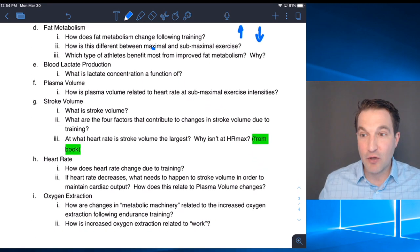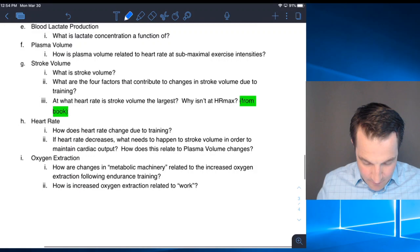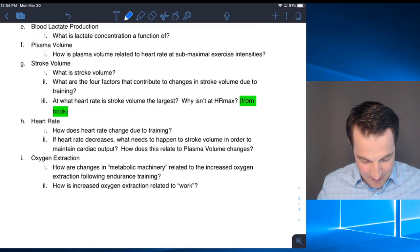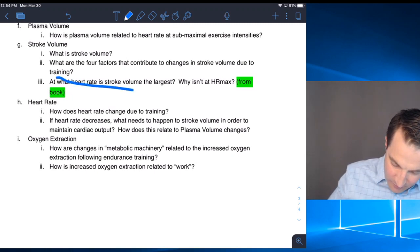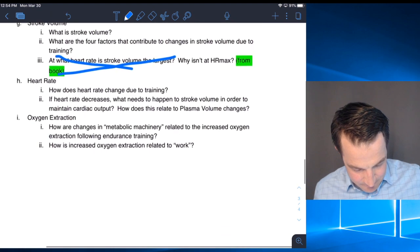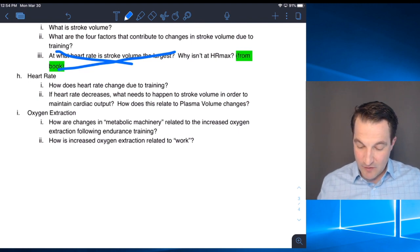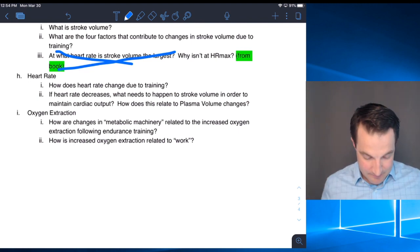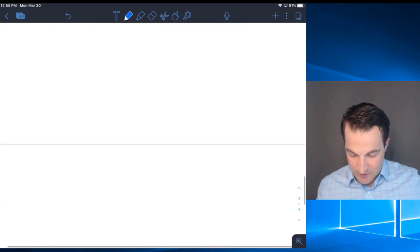What type of athlete benefits most from improved fat metabolism? That's going to be a long distance endurance athlete because their exercise is at lower exercise intensity. Lactate concentration is a function of production and clearance. Lactate concentration is lactate production minus clearance. Stroke volume is the amount of blood you're pumping out of your heart per heartbeat. If heart rate decreases, what needs to happen to stroke volume to maintain cardiac output? It needs to go up. Oxygen extraction is related to our mitochondria.